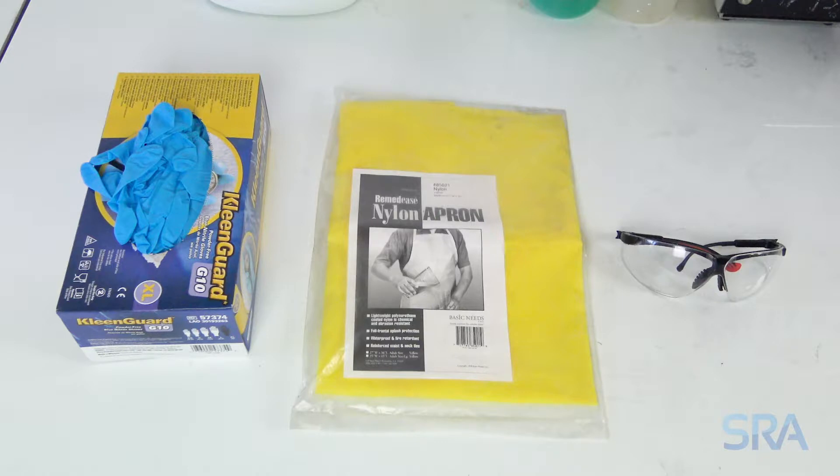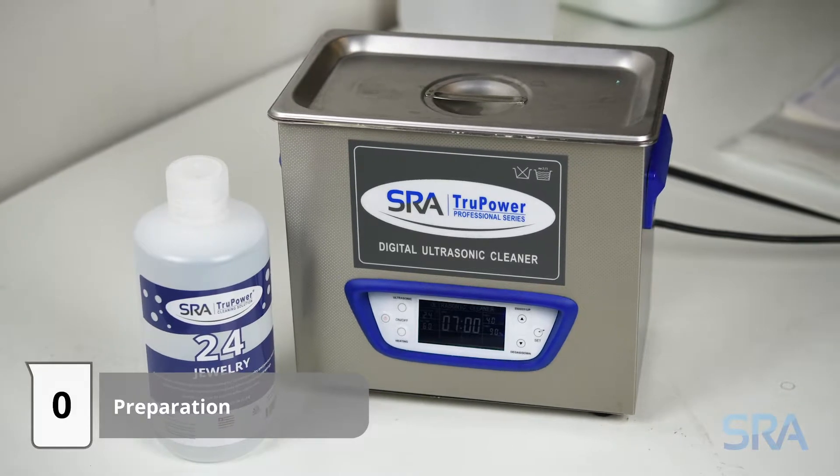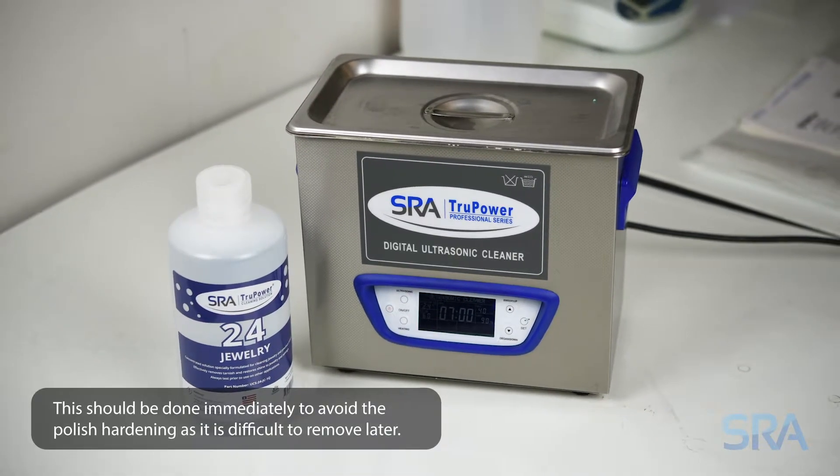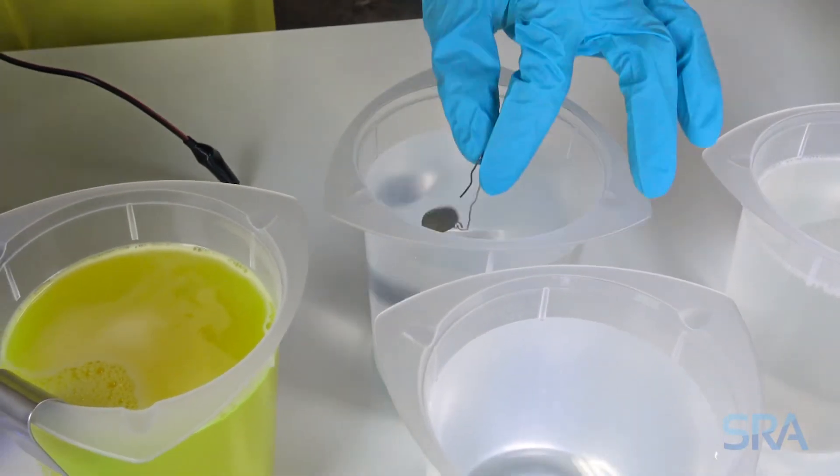For repair items or badly oxidized pieces, you'll want to start with polishing and then cleaning in an ultrasonic cleaner. Once clean, rinse in distilled water. For new items you can usually go straight to the electro cleaner.